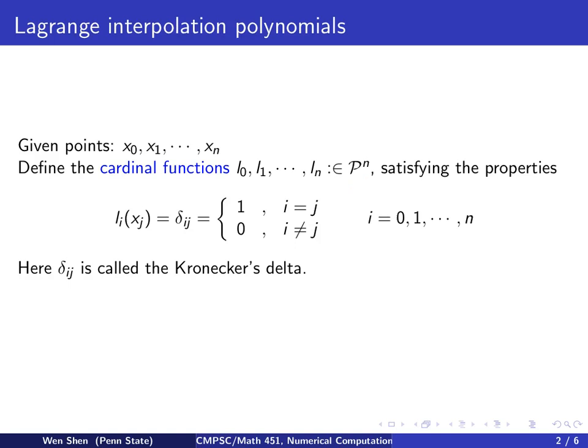The cardinal function l with the index i is associated with the grid point xi. The main property satisfied by the cardinal function is the following: the cardinal function l with index i evaluated at the point xj shall equal delta ij, where this delta is the so-called Kronecker's delta. When the index i equals j, it returns the value 1. Otherwise, when i is different from j, it returns the value 0. And i runs from 0, 1, all the way to n through all the given points.